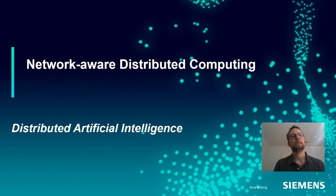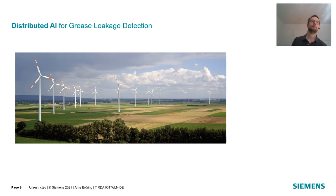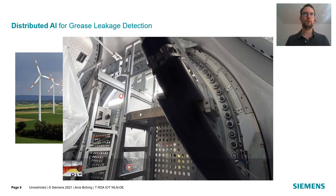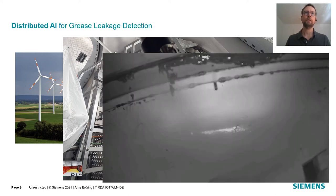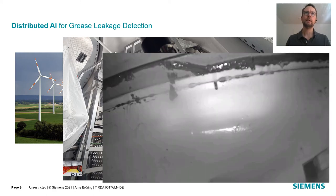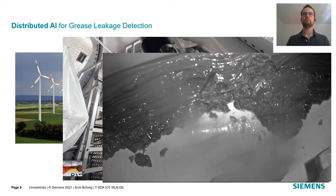The next topic is distributed artificial intelligence. I want to talk about a project which deals with the management of wind parks, particularly the problem of detecting grease leakages in wind turbines — more specifically in the hub of the wind turbine, which you can see a photo from the inside. There you see the main bearing between the fixed part of the turbine and the rotating outer part. This main bearing can have grease leakages, and our aim was to detect those early on. It starts with a little bit of leaking, then it can become really ugly over time, which is a problem for the wind turbine.